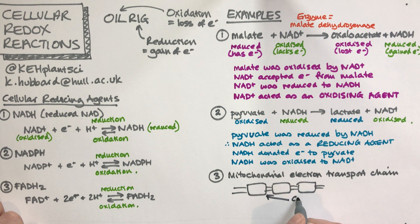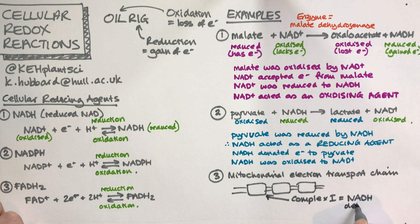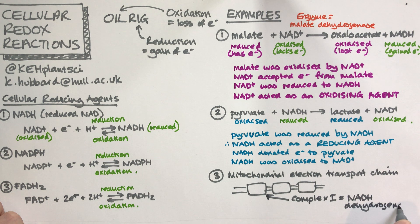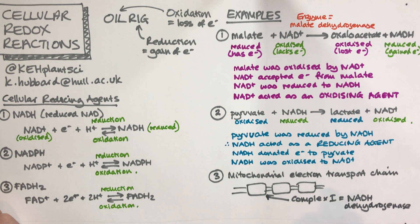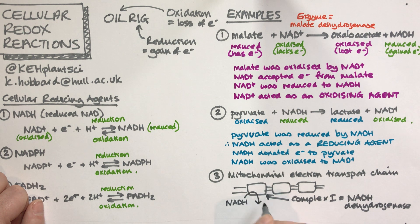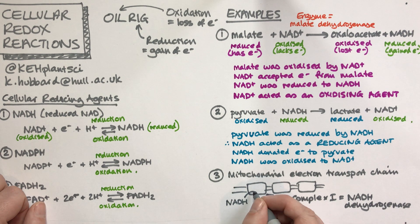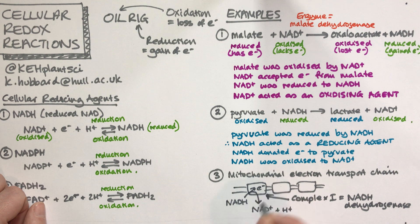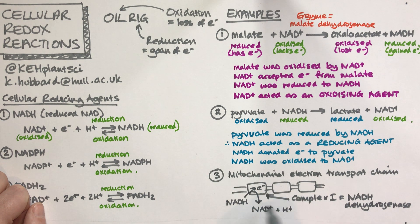The first one of those, the first complex, complex one, is called NADH dehydrogenase. That's a clue that there's going to be something redox happening. What happens there is we have NADH is oxidized to NAD+ plus a proton, and the electrons start to be passed in the electron transport chain.